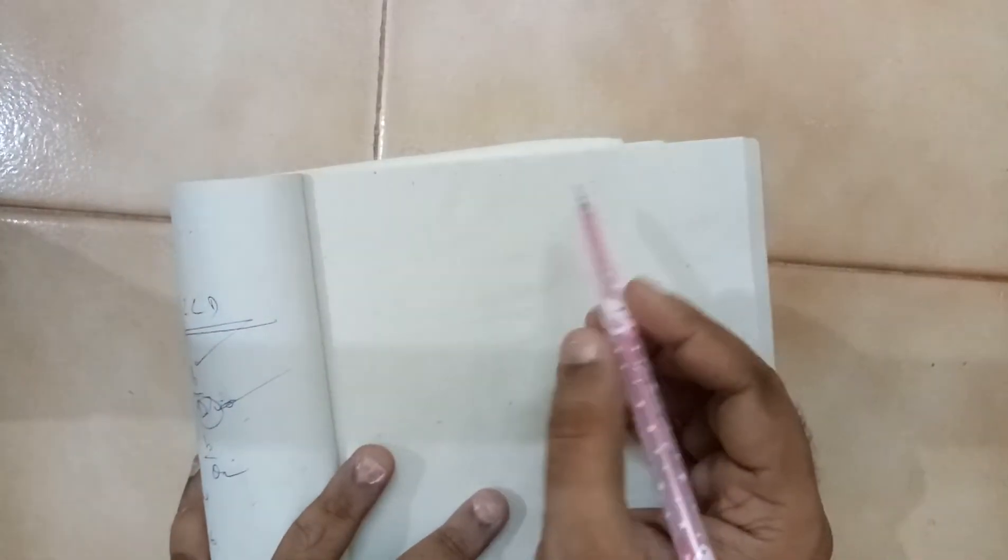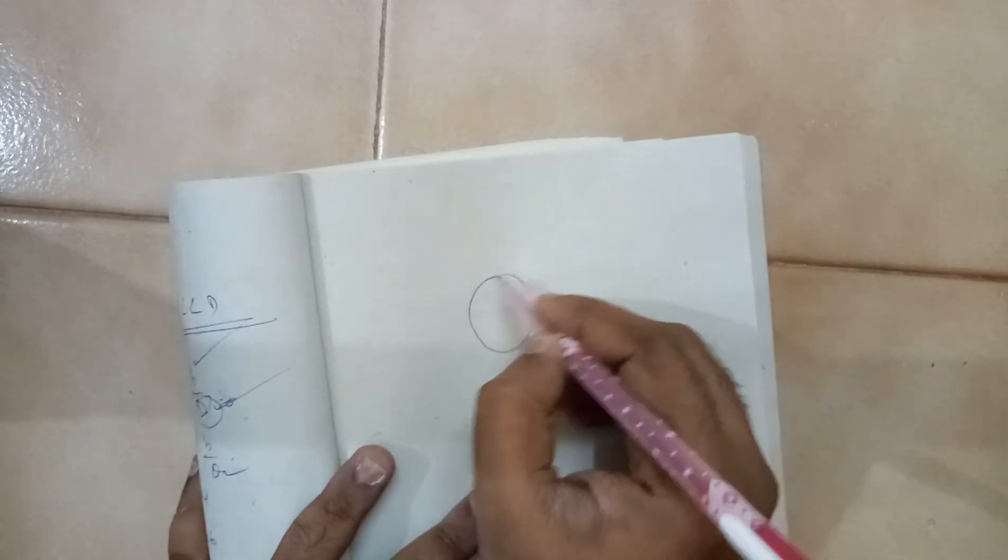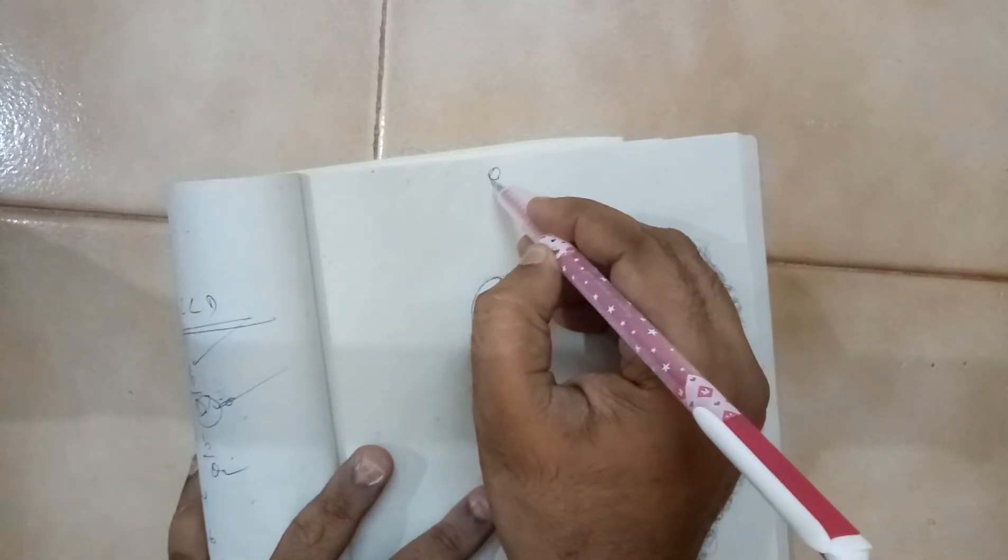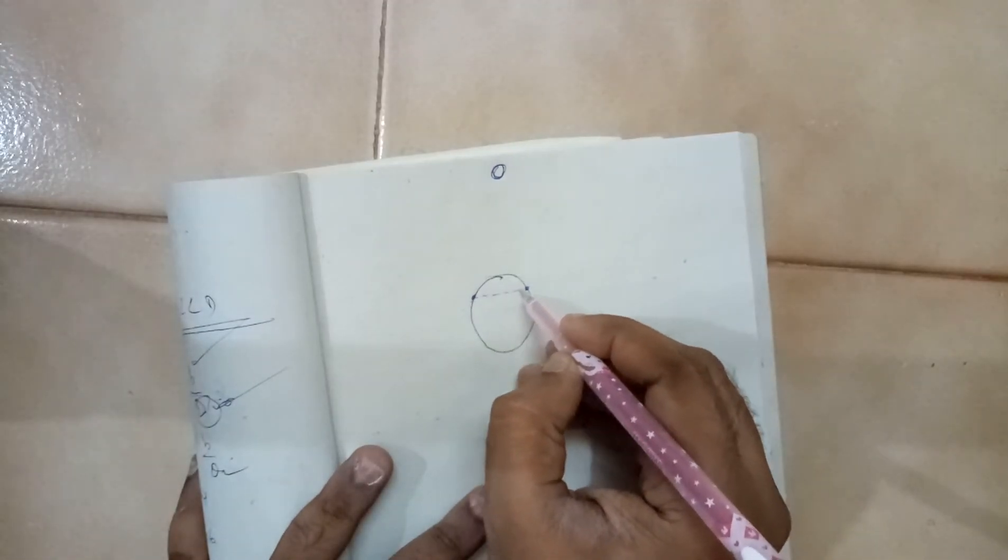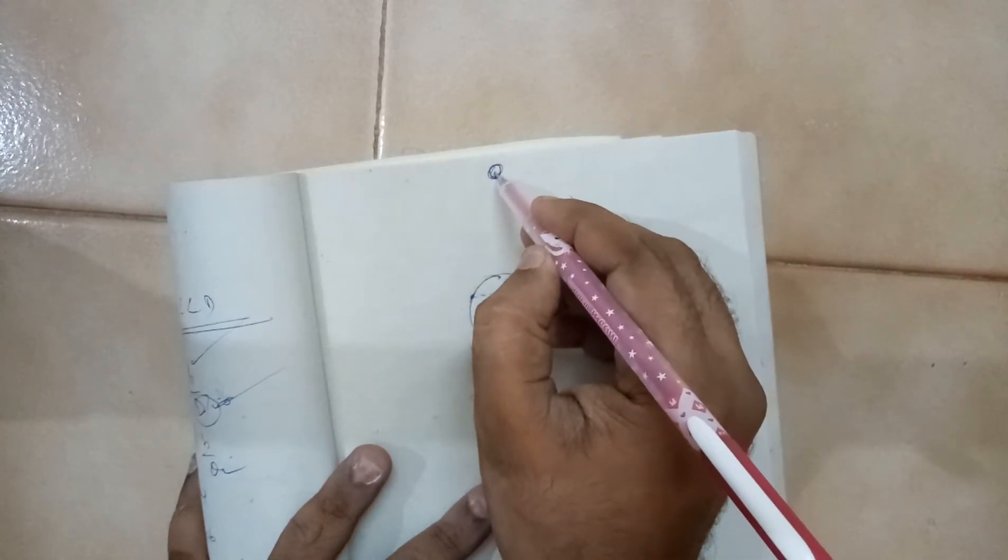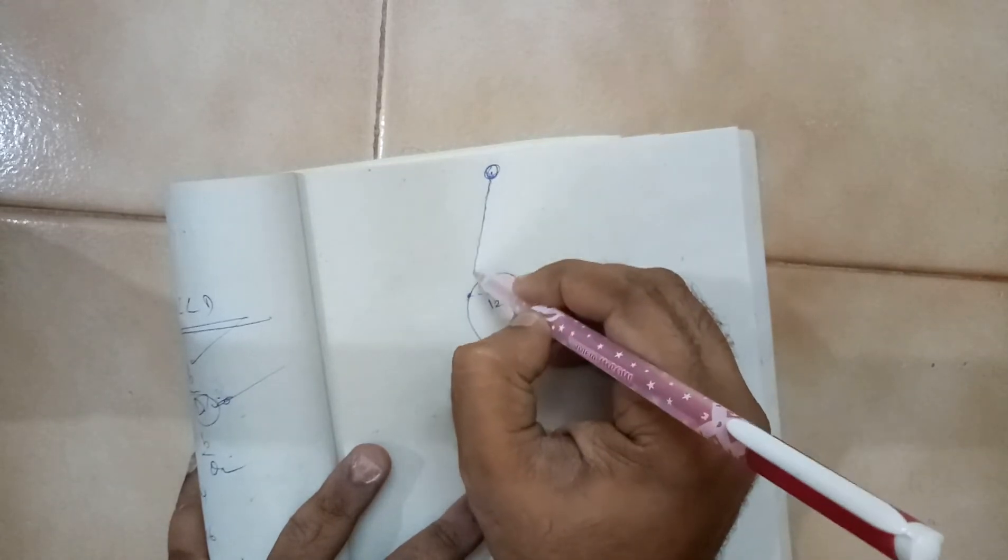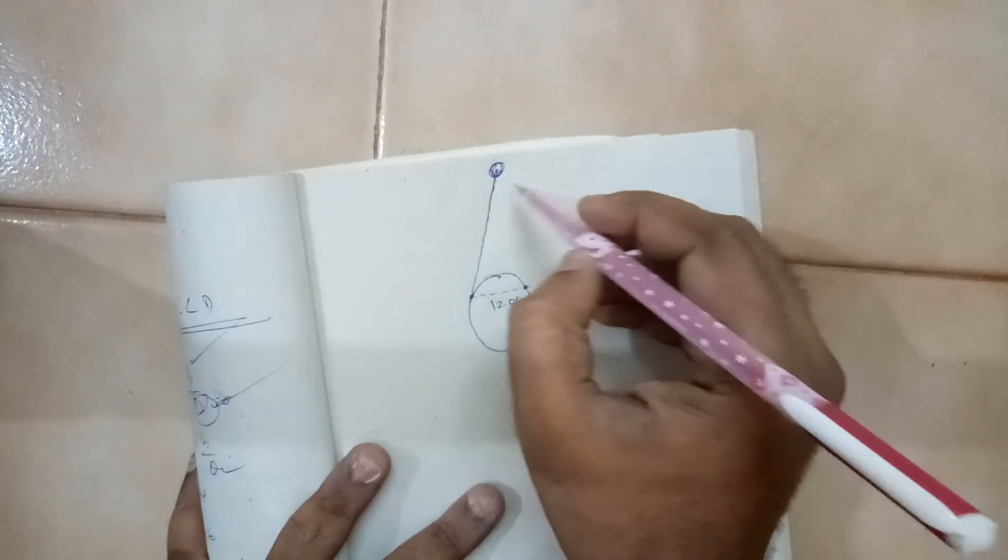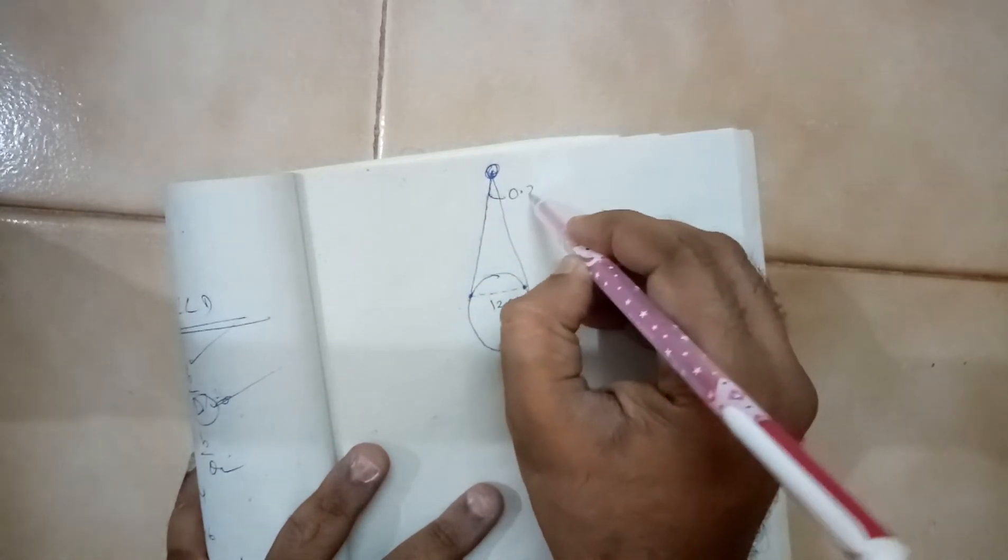Let us see the application of the parallactic method in a problem. The moon was observed from two points on the Earth's surface. The two points were separated by a distance of 1200 km, and the parallactic angle subtended there was given as 0.2 degrees.